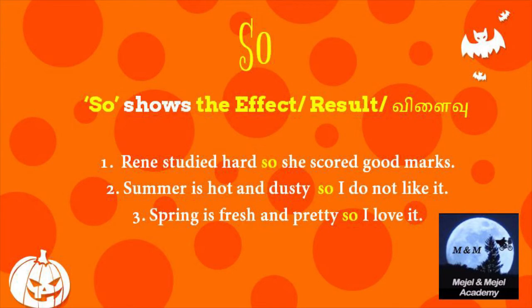Now let's look at the first conjunction: 'so'. What is 'so'? 'So' is used to show the effect or result — vilaivu. Example: 'Renee studied hard, so she scored good marks.' Renee studied well — that is the cause — and she scored good marks is the effect, therefore 'so'.